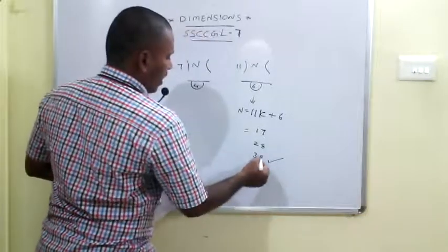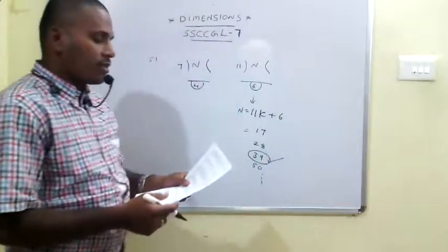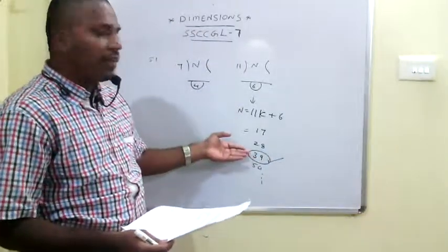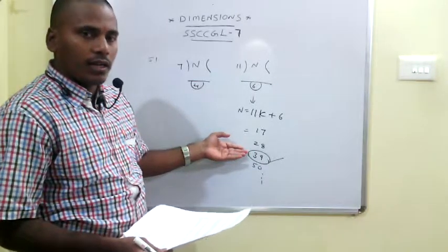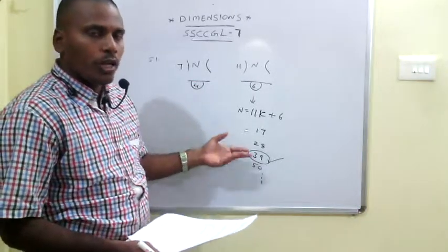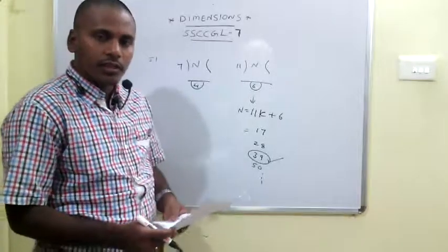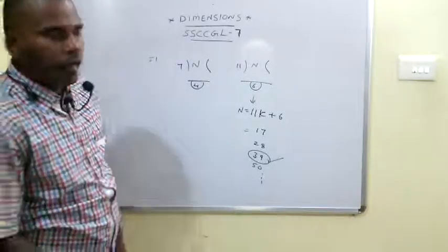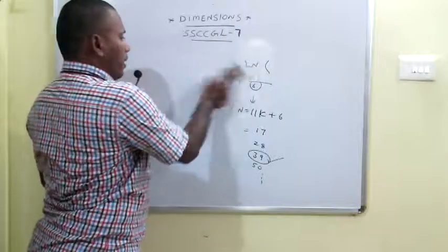Our value of n is 39. When we divide 39 by 13, the remainder is 0. So I am left with no chocolates. The answer is 0. This is the first problem of the seventh paper.